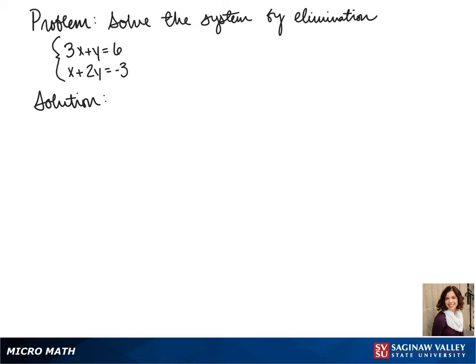First, we need to figure out which variable we're going to eliminate. Since we have an x and a y that both have a coefficient of 1, either one would be easy to solve for, but we're going to pick x.